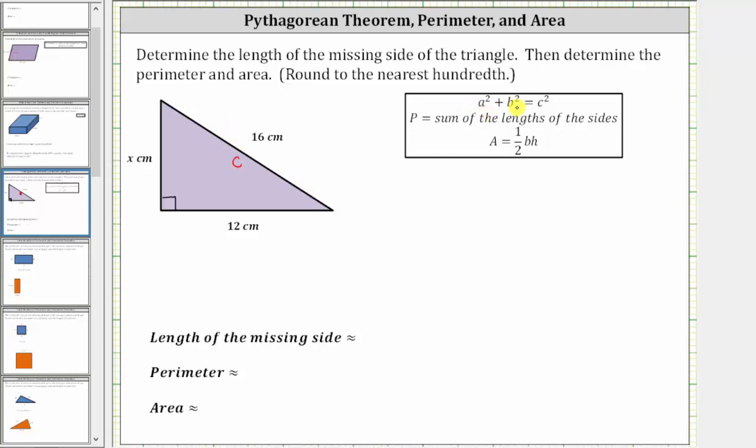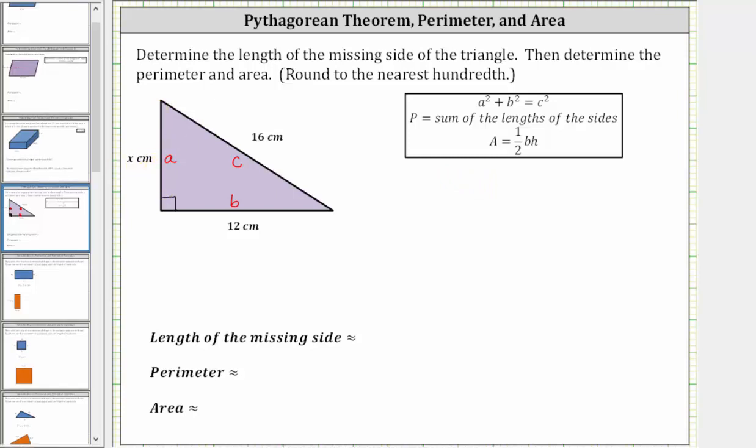The legs a and b are the two sides that form the right angle. It does not matter which leg is a and which leg is b. Let's call this leg a and call this leg b. And now applying the Pythagorean theorem, we can determine the length of this side here, which is x centimeters. Since a squared plus b squared must equal c squared, we have x squared plus 12 squared must equal 16 squared.